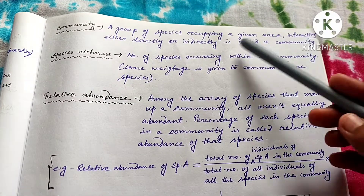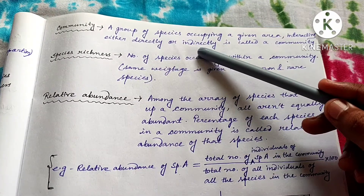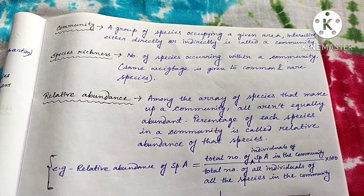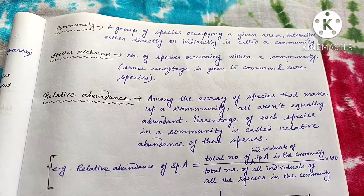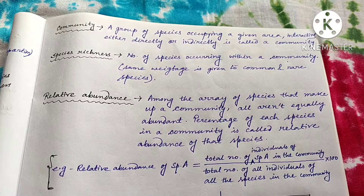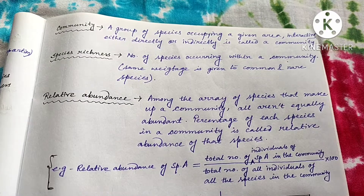So what is community? Community is a group of species occupying a given area, interacting either directly or indirectly. Community is nothing but an assemblage of different species present in a given area and they are interacting with each other. Species are actually a population of individuals which are reproductively isolated from another population. So species are reproductively isolated organisms and community is an assemblage of different species in a given area.